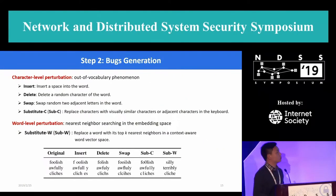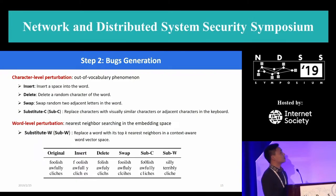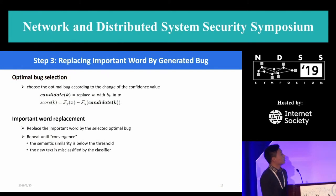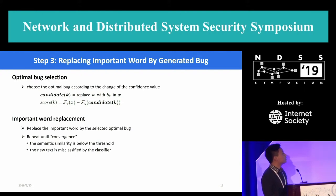The second step is to generate perturbations. We call the slightly perturbed words as bugs. Taking human perception into consideration, we carefully designed five kinds of perturbations: insert, delete, swap, sub-C, and sub-W. The third step is to replace the important words by the generated bugs. First, we choose the optimal bug that can maximize the change of the confidence value from the candidates. And then we replace the important word by the selected optimal bug. Finally, we repeat the second and the third steps until convergence.